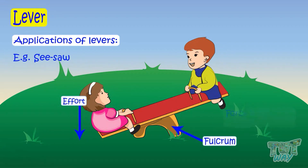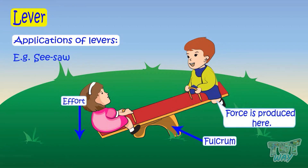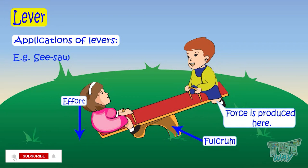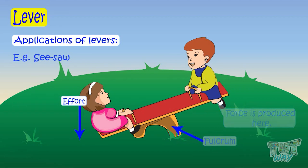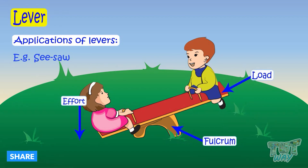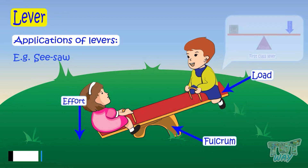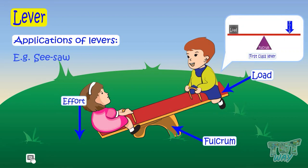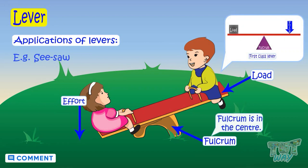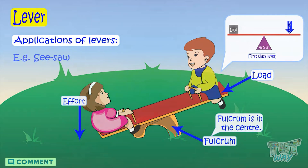Here is another example — a seesaw. The force is being applied here, this is the fixed support, and here the force is produced and the boy is lifted up. So this point is the effort, this is the fulcrum, and this is the load. Again, this is an example of a first class lever, as the fulcrum is in the center.